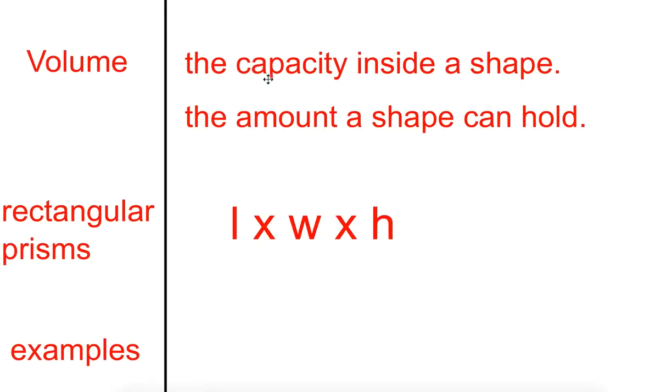So let's get these definitions in. You can choose either one. Volume is the capacity inside a shape, or it's the amount a shape can hold. In a rectangular prism, it's length times width times height.